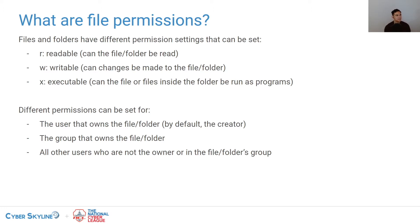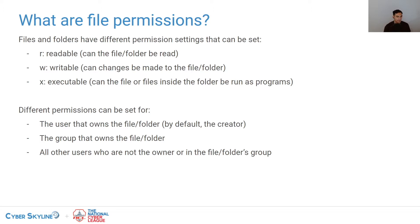In Linux, you can set permissions on files and folders. Folders and directories are sometimes used interchangeably — for our purposes today, there's no meaningful difference. You can set a permission on a file or on a folder, and if you set a permission on a folder, it cascades down to everything inside that folder. There are three types of permissions: read, which lets you view contents; write, which lets you make modifications; and execute, which lets you run a program. The shorthand is R for readable, W for writable, and X for executable.